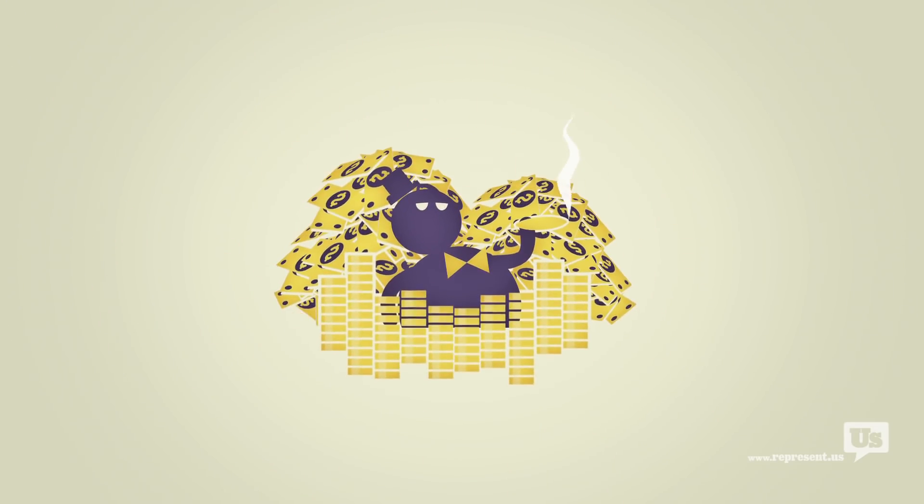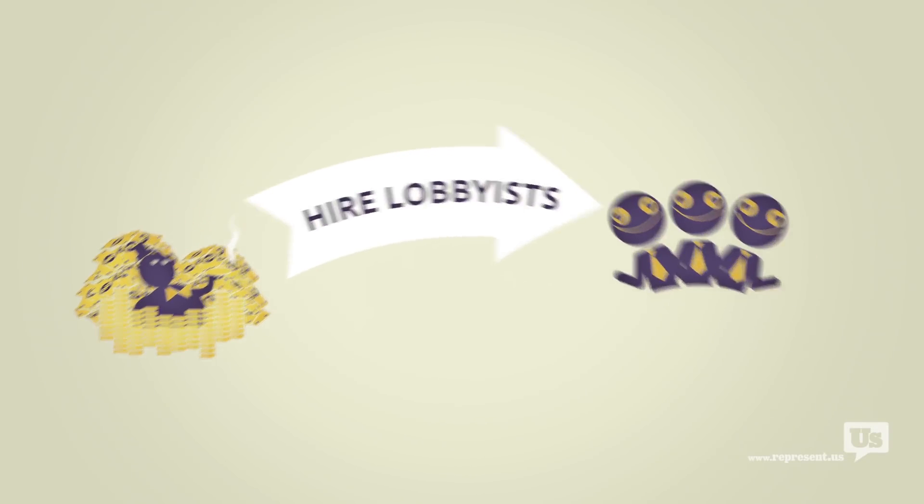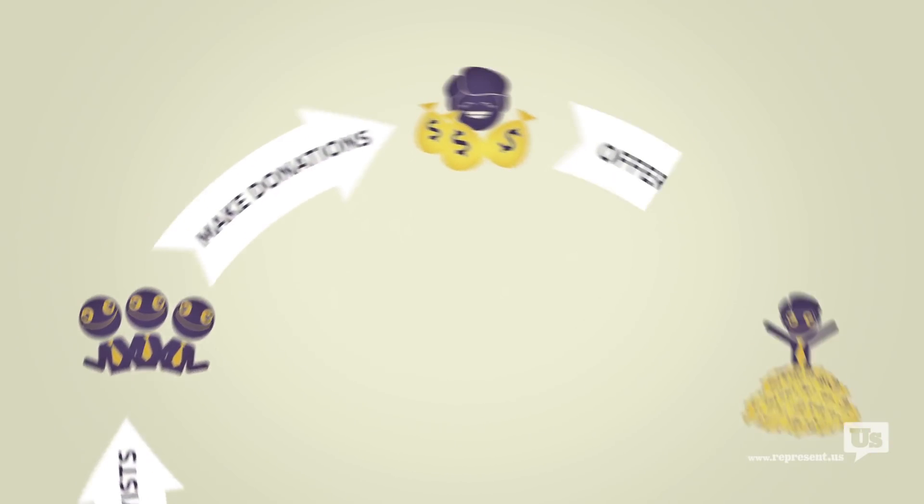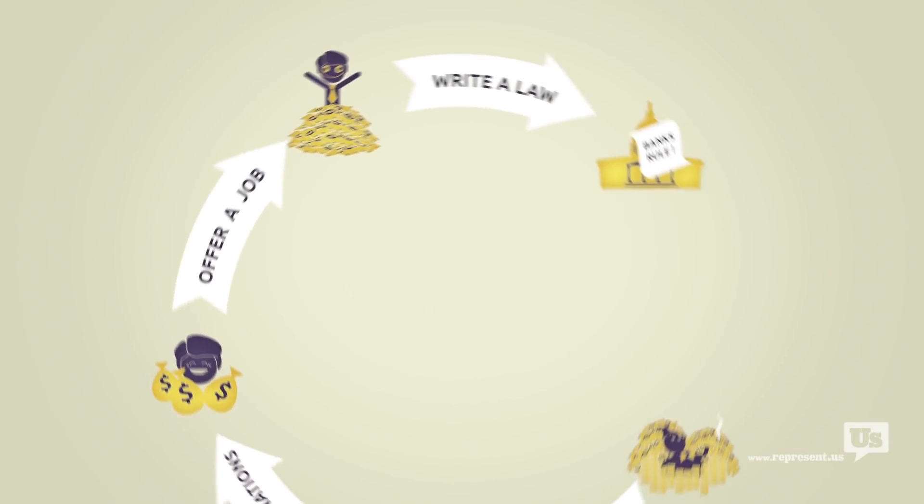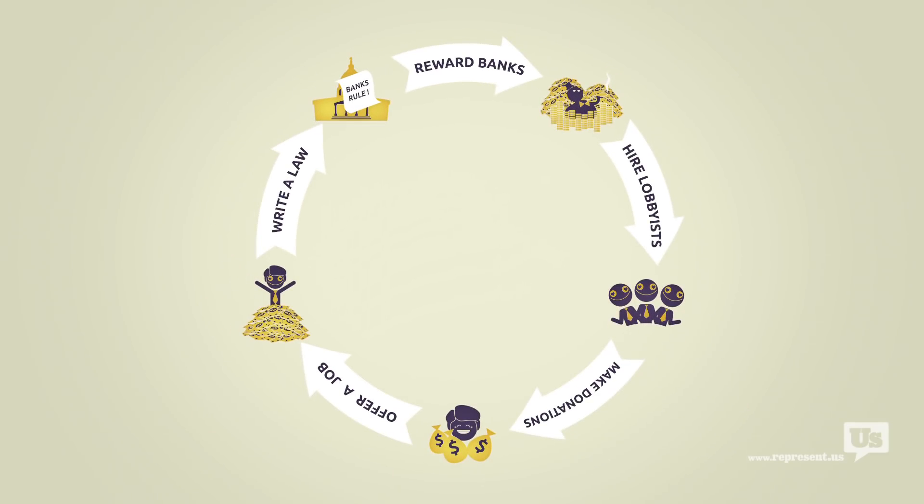This is how a bill becomes a law. A special interest hires some lobbyists. Those lobbyists collect campaign contributions, offer jobs, and then write the laws that Congress then passes to help those same special interests.